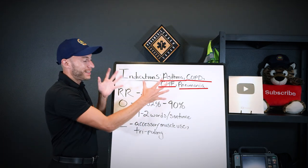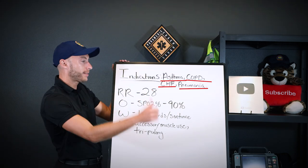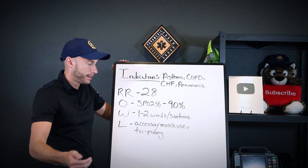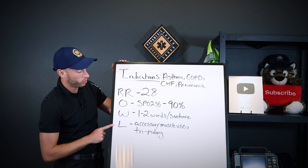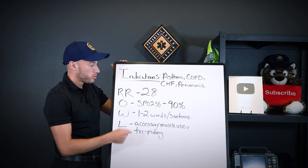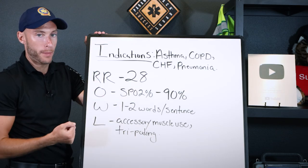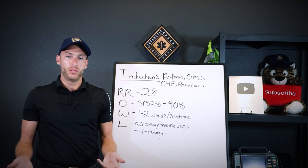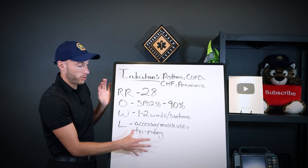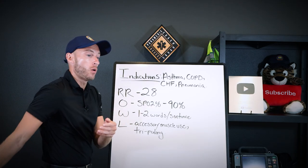All these conditions mess with our gas exchange, which is why we use CPAP — that positive pressure to keep the alveoli open so oxygen can flood in and carbon dioxide gets out. Now here's a mnemonic I use for my students: RR OWL, the pirate owl mnemonic. It gives a clear picture of how sick your patient is respiratory-wise. On an EMT or EMR level, we would first trial a non-rebreather, and then move to CPAP if needed.